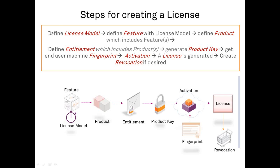To sum up, these are the steps: define a license model, then define a feature with the license model, then define a product which includes one or more features. When your customer calls to request a license, create an entitlement, add the relevant products, generate it to get a product key, and send the product key to the end user. The end user activates it — using a customer portal in most cases — which uses the machine fingerprint to create a license file that allows the application to work. That was about the steps for creating an RMS license using Sentinel EMS Enterprise. Thank you for watching, have a good day.